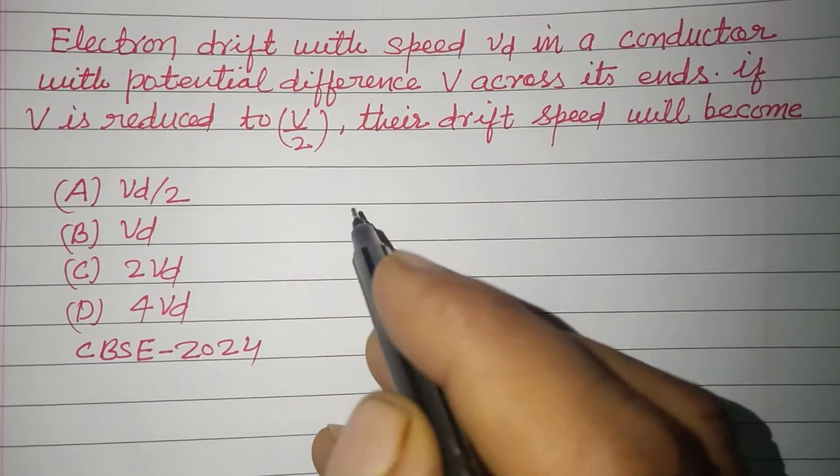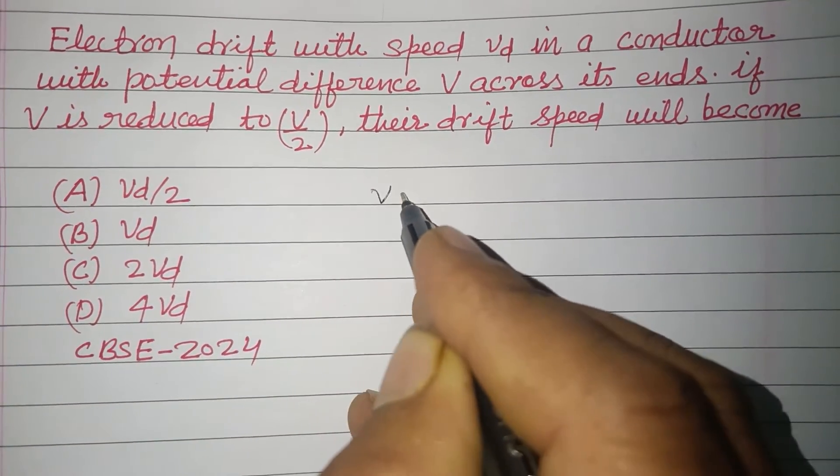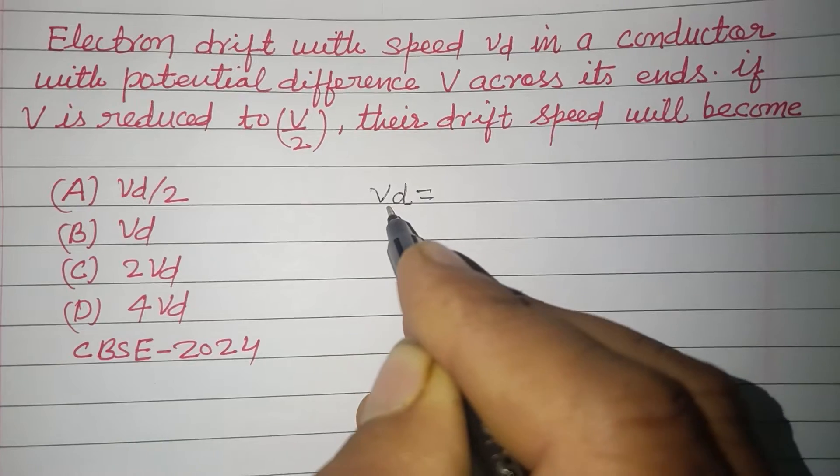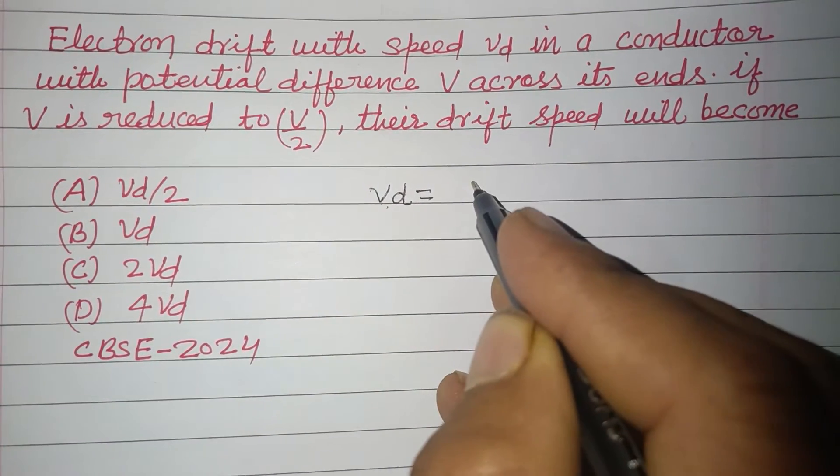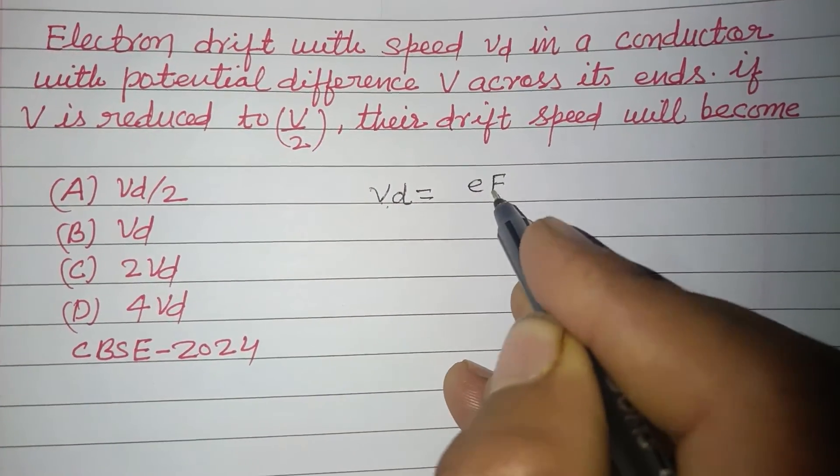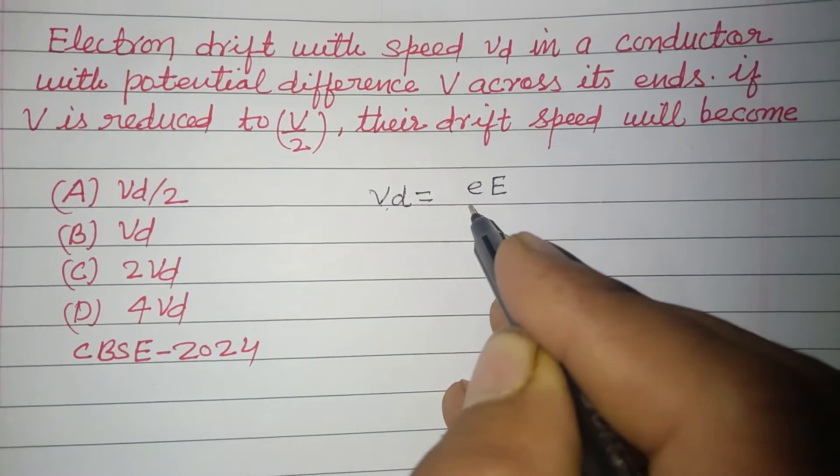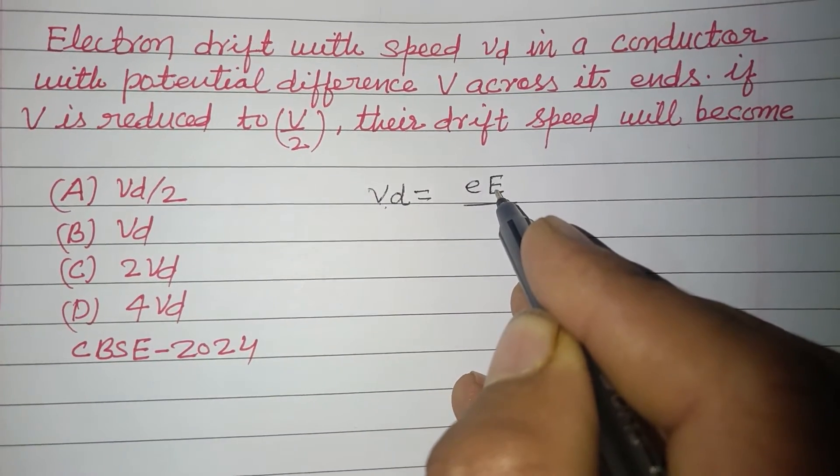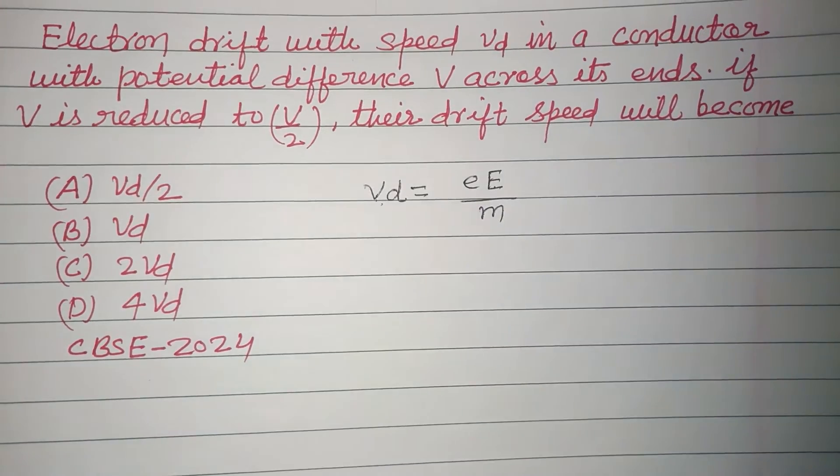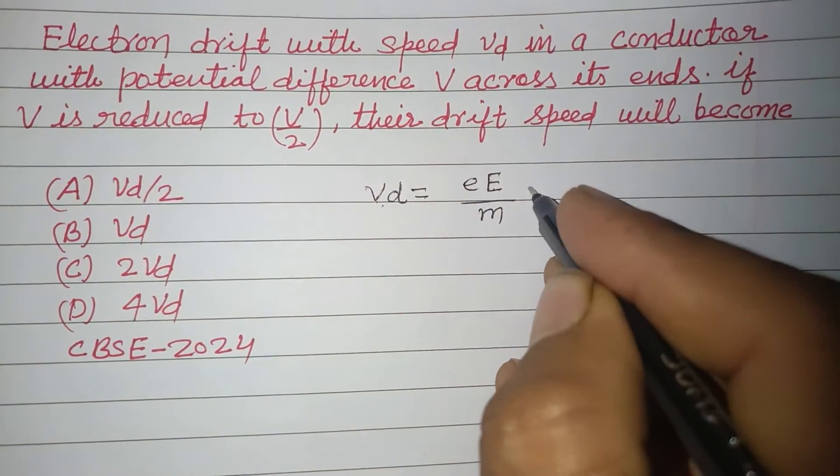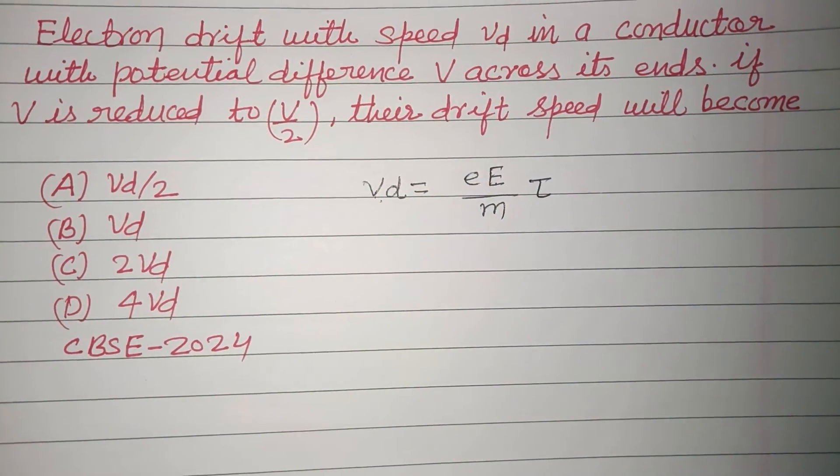So students, first we got the relation between drift velocity. Drift velocity equal to eE, where e is the charge of electron and E is electric field, over m mass of the electron into tau, time of relaxation.